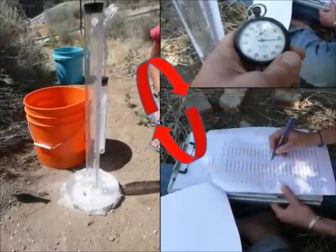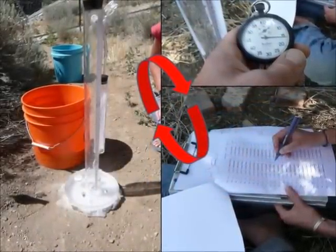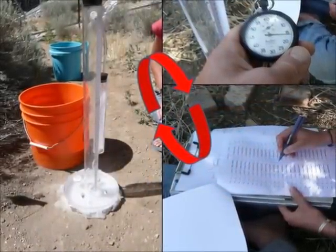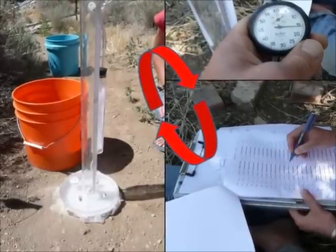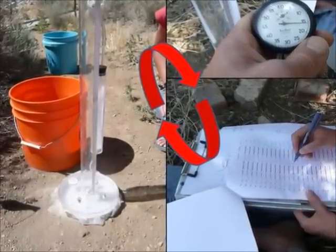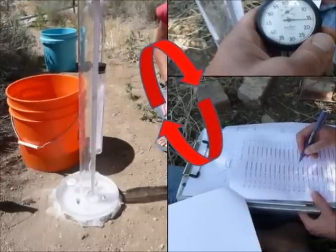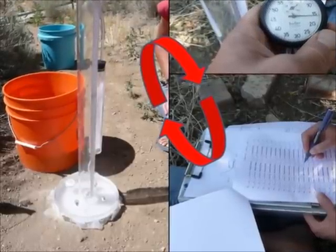Field analysis of Saturated Hydraulic Conductivity or infiltration rate through large disc permeameters is easy. When all preparation steps are complete, one just needs a stopwatch, data sheets or a field notebook, and a large disc permeameter.